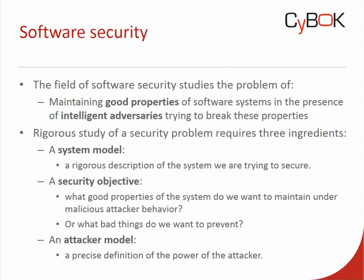A third important ingredient is the attacker model. In the attacker model, we make assumptions about what an attacker can and cannot do. If an attacker can do anything — read and flip any bit in any computer system across the world — there's no way to achieve any notion of security. So we have to make some assumptions on what an attacker can and cannot do. Based on these assumptions, we can then come up with security mechanisms that may help us achieve our security objectives.